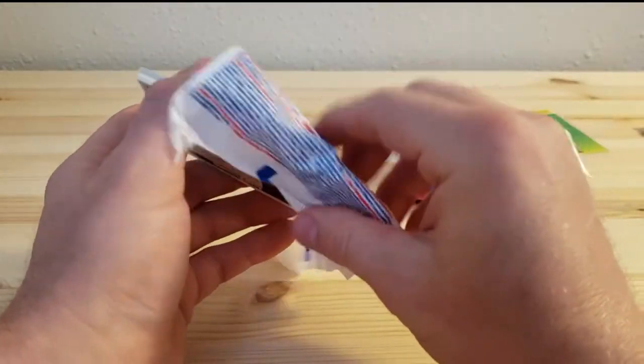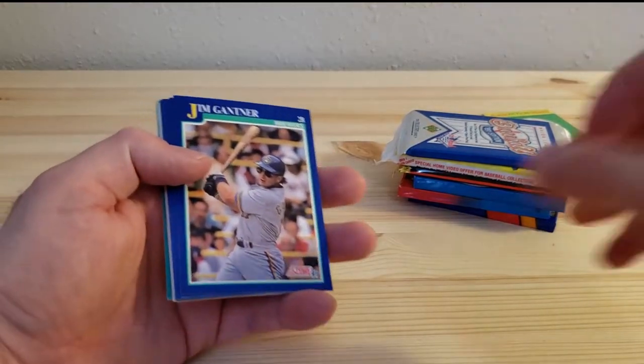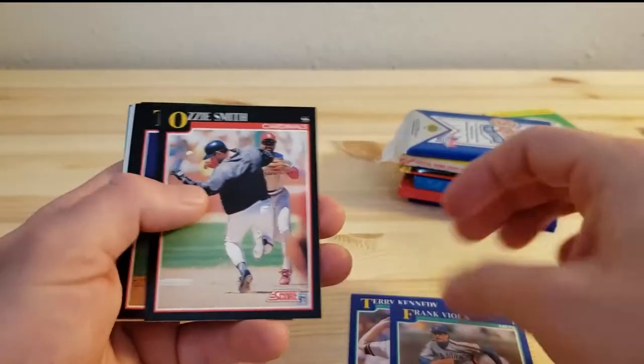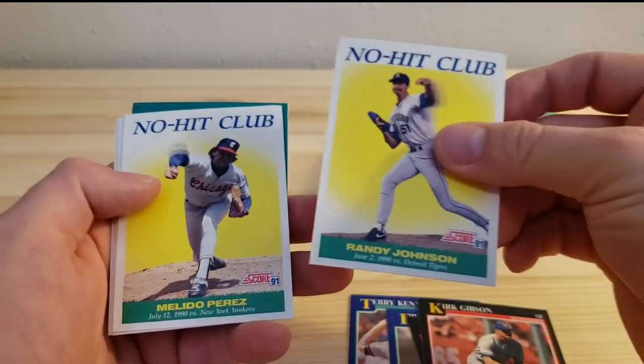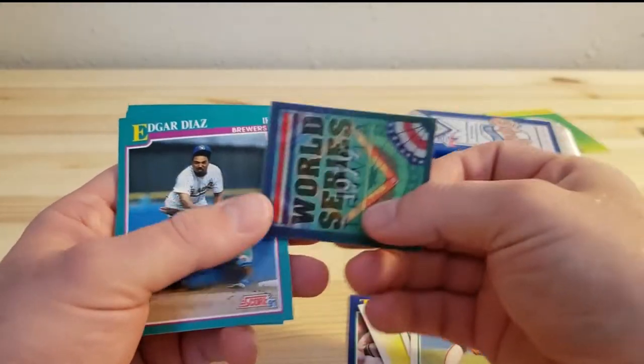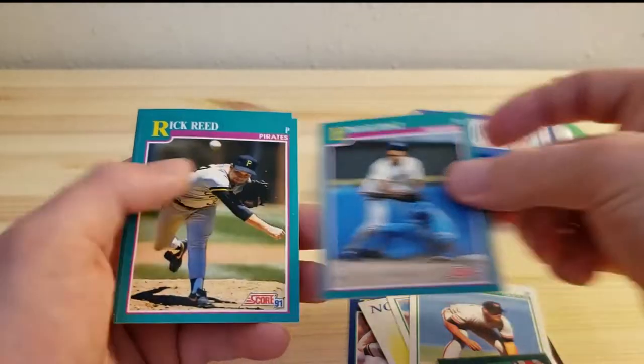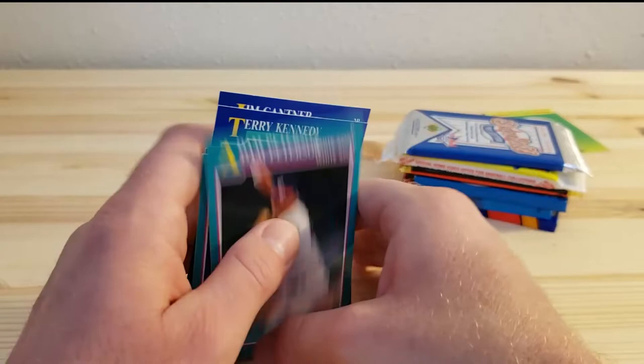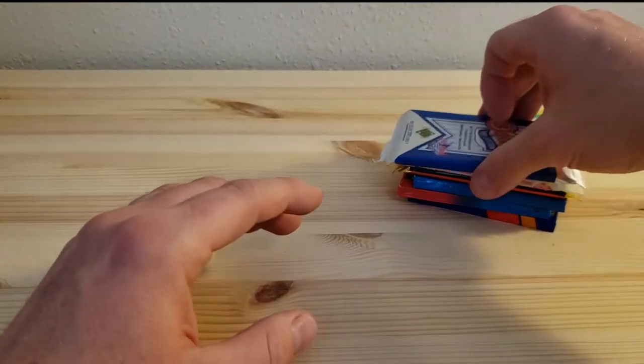This is 1991 Score Series 2, Chipper Jones, and then of course I'm looking for the Mickey Mantle Auto, which is definitely a possibility. Andre Dawson, Frank Viola, Ozzie Smith, Juan Gonzalez, Kirk Gibson, Randy Johnson, No Hit Club, Melido Perez, Tom Lampkin, Ed Gomez, World Series 1979, Edgar Diaz, Rick Reed, Dale Mahorcic, Adam Peterson. So we did not get one of the hits there. So that's great. I don't want too many hits. A lot of Hall of Famers though.